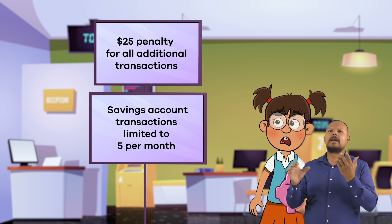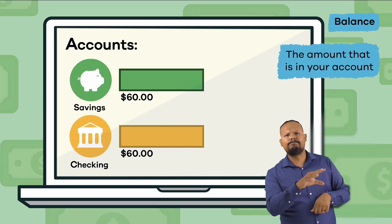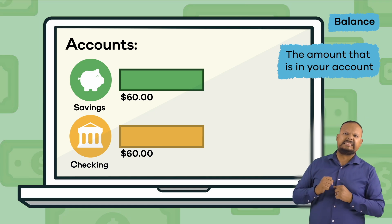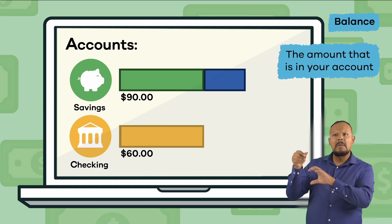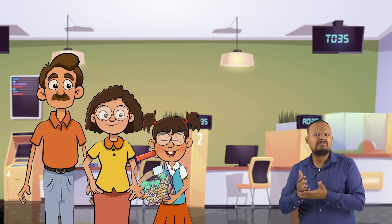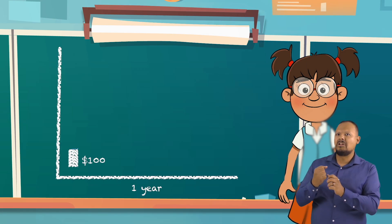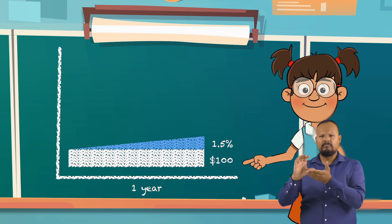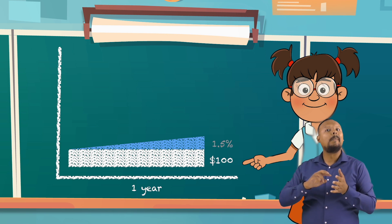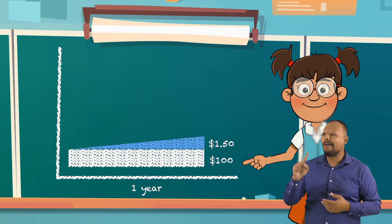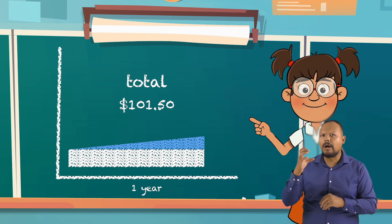If you use it too often, the bank can actually charge you a fee. Another way a savings account is different from a checking account is that it pays you interest on your average balance, or amount that is in the account. For example, our friend Frankie Finance had her parents help her open up a savings account last year. She put $100 in the account and earns 1.5% yearly interest on that amount. This means that she earned an extra $1.50 last year. So the total amount of money in her savings account is now $101.50.